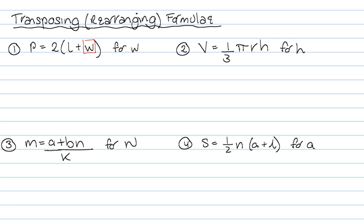So the first thing we do, put a box around the W because that's what we want to leave. So we're going to get rid of everything but that W. Now looking at the front, you've got these two. So we'll get rid of that first because the L plus W is grouped by the brackets. So we'll get rid of the 2 first.